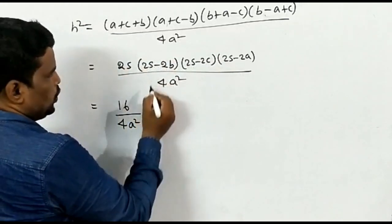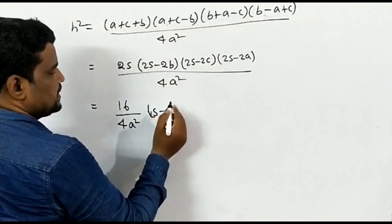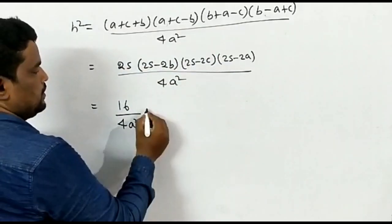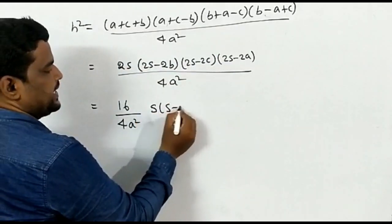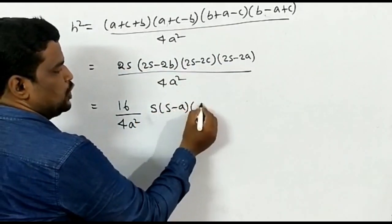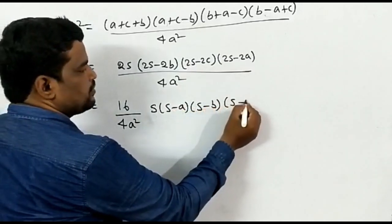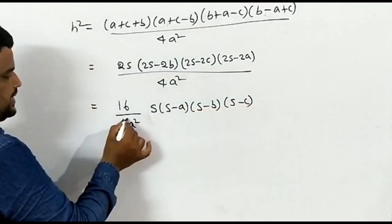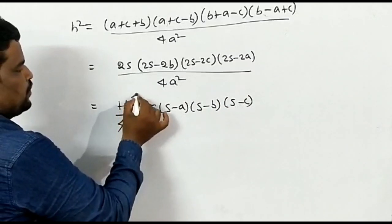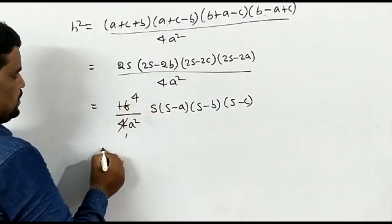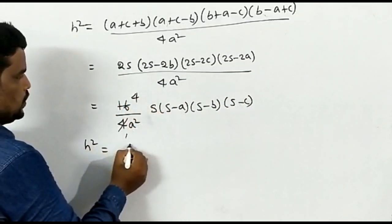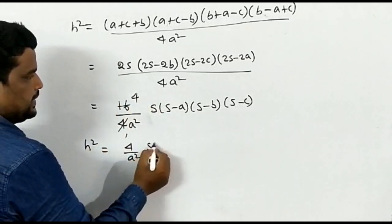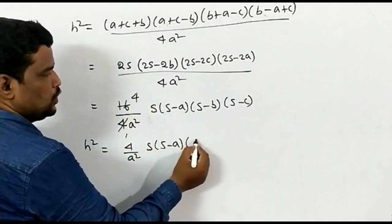Factoring out 2 from each of the four factors in the numerator gives 2⁴ = 16 in the numerator. So: H² = 16 · S(S−A)(S−B)(S−C) / 4A². Cancelling 4 from 16 and 4A², we get: H² = 4 · S(S−A)(S−B)(S−C) / A².